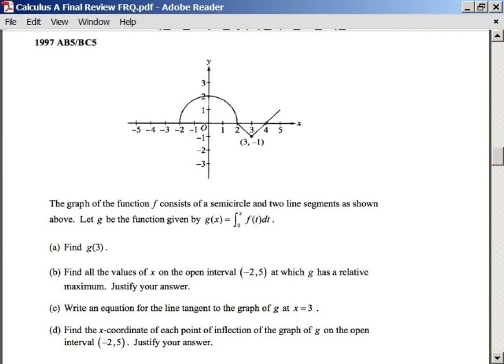Alright, 1997 AB5 BC5. This is our function. It says the graph of the function f consists of a semicircle and two line segments as shown above. Let g be the function given by this. So g uses this. And if you guys know the fundamental theorem of calculus part 2, you know that the derivative of g is just going to be f of t. So this is actually f, or g prime, too.